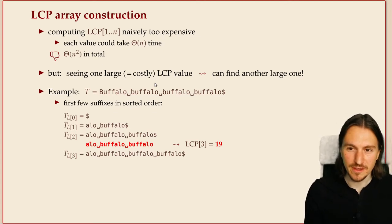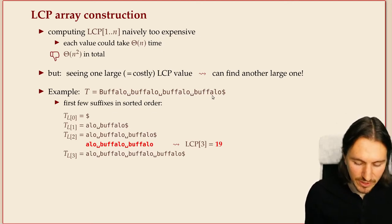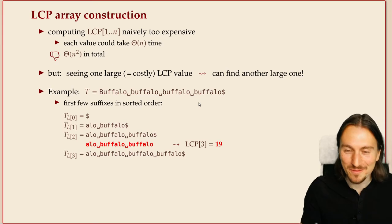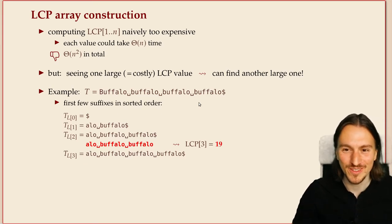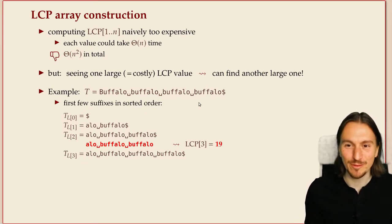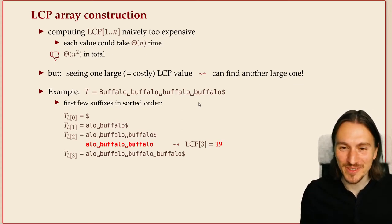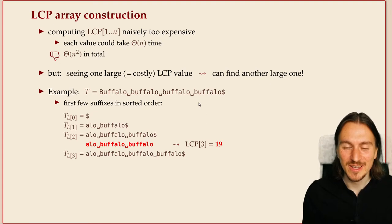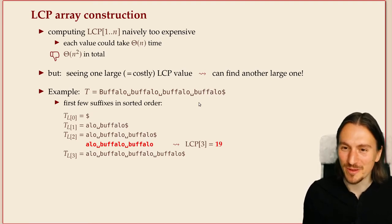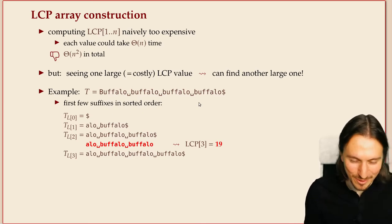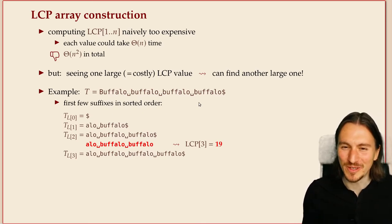So suppose there is a costly LCP value. That means we can also find another one and let me show that on this example, a valid example of an English sentence. You can actually add three more buffaloes. So it's buffalo buffalo buffalo buffalo, a nice coincidence that buffalo is a noun and a verb at the same time. You can go up to seven buffaloes, but that's not my point for today.